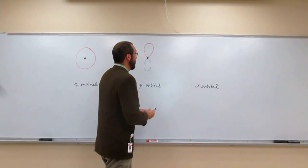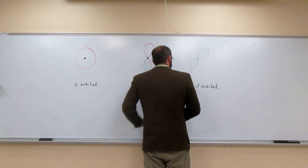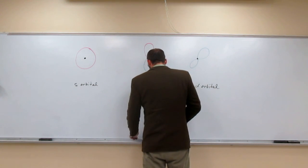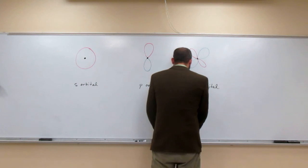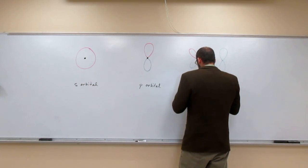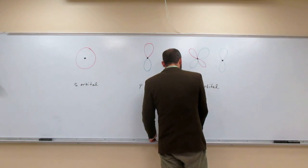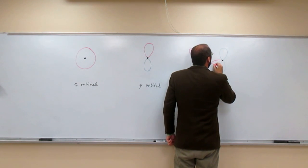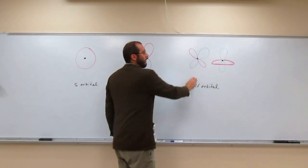And like I said, the d orbitals, four out of the five are cloverleaf shaped. And then the last one is dumbbell shaped with a ring around that. We call that the d z-squared. So all the other d orbitals are cloverleaf.